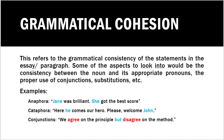Grammatical consistency is especially important in academic writing. For example, if you write 'Jane was brilliant. He got the best score,' the pronoun is incorrect — since Jane is a female figure, the pronoun must be 'she,' not 'he.' We look for grammatical consistency: if you are pertaining to a female figure, grammatical rules tell you to use pronouns meant for a woman. If it is male, the pronouns assigned must be for males. That is all for cohesion.